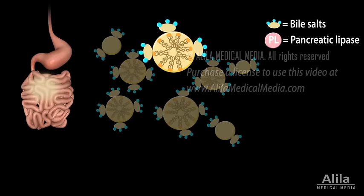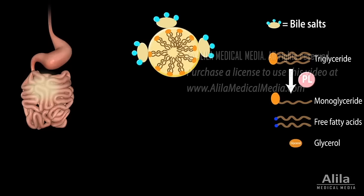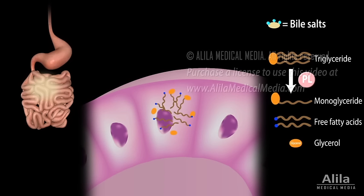Pancreatic lipase then converts triglycerides into monoglycerides, free fatty acids, and glycerol. These products move into the cells of the intestinal epithelium — the enterocytes — inside which they recombine again to form triglycerides.